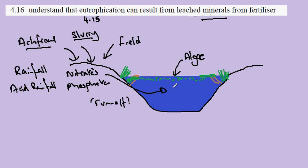And so now we have a high nitrate and phosphate content in the water. As we've learned from 4.15 on eutrophication, this leads to a population increase in the algae, sometimes known as a bloom, which results in the algae population increasing within the water.